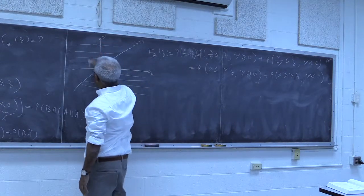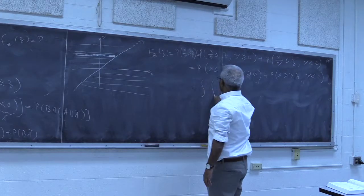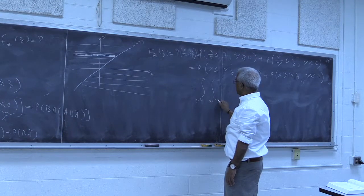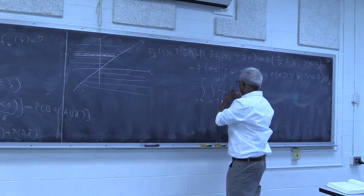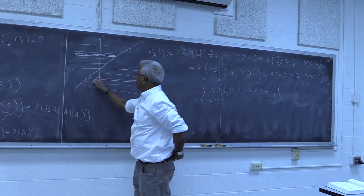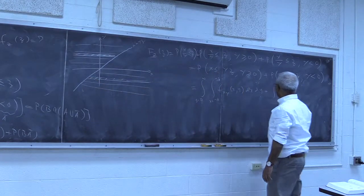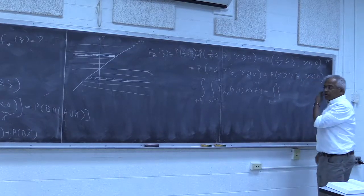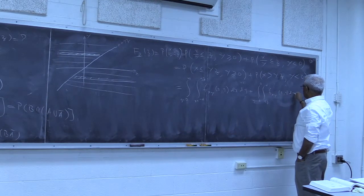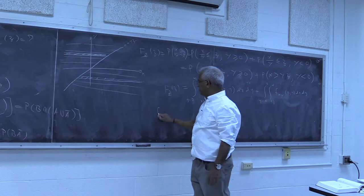I have already identified these regions. For the first integral, we can integrate by taking a strip: y goes from 0 to infinity and x goes from minus infinity to yz. For the other portion, y goes from minus infinity to 0 and x goes from yz to infinity. This gives us F_z(z), and we need to take the derivative with respect to z.